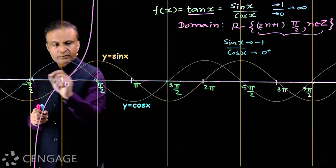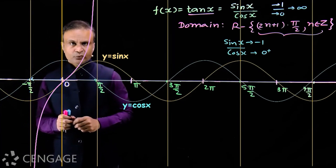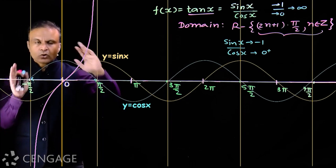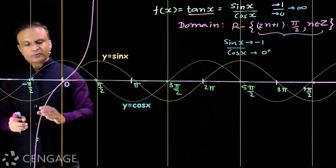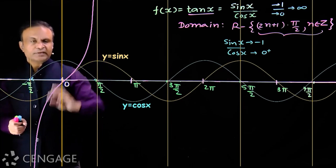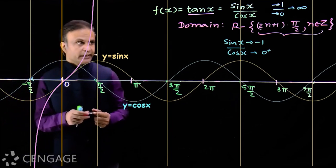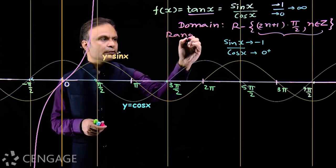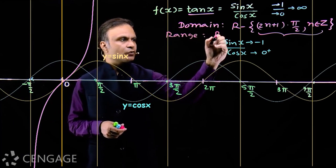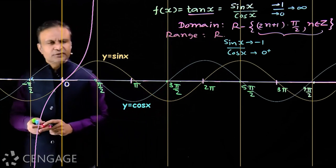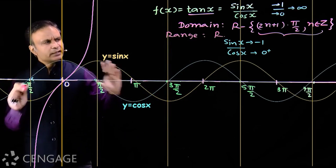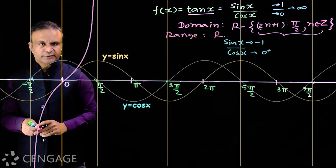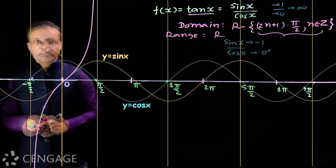So on the interval (-π/2, π/2), the graph of tan x increases continuously and takes all real values from -∞ to +∞. This means the range of the function tan x is all real numbers.